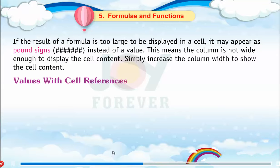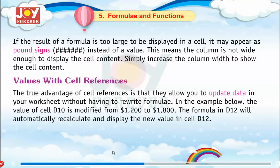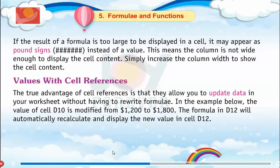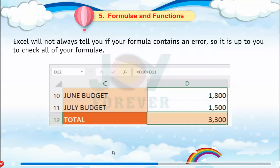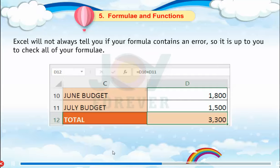Values with Cell References. The true advantage of cell references is that they allow you to update data in your worksheet without having to rewrite formulae. In the example below, the value of cell D10 is modified from $1,200 to $1,800. The formula in D12 will automatically recalculate and display the new value in cell D12. Excel will not always tell you if your formula contains an error, so it is up to you to check all of your formulae.